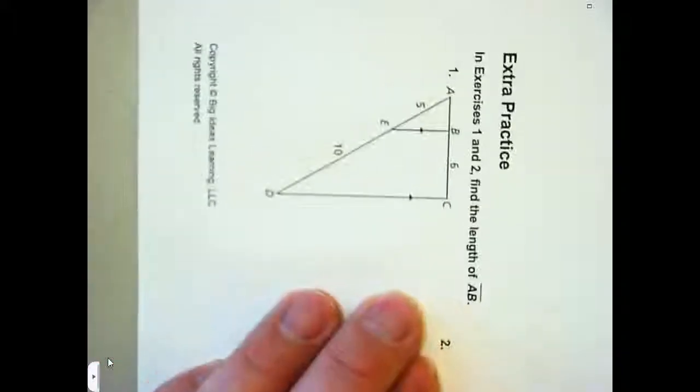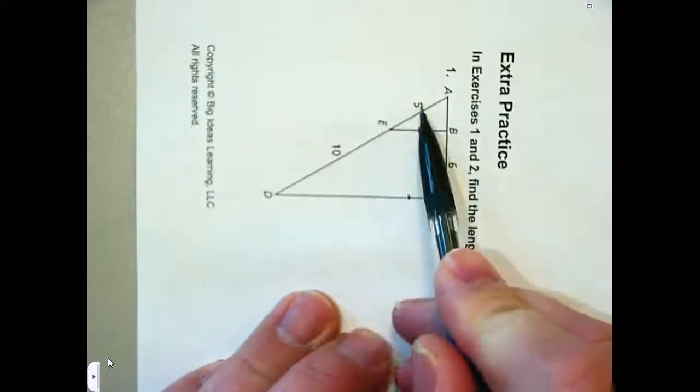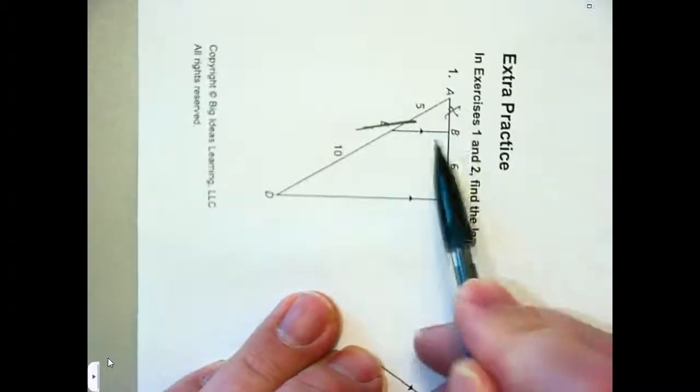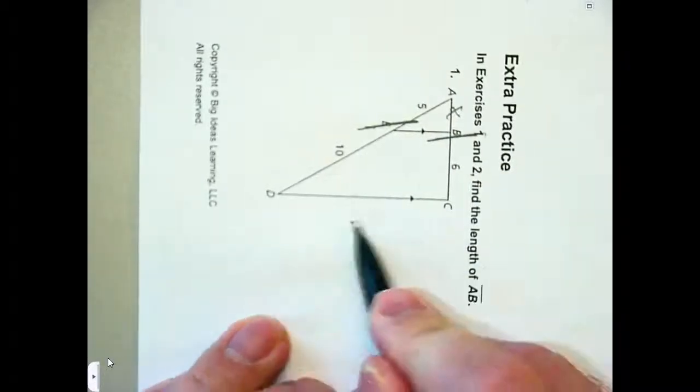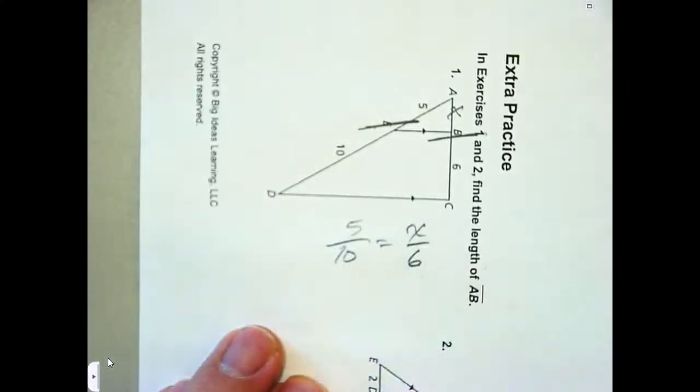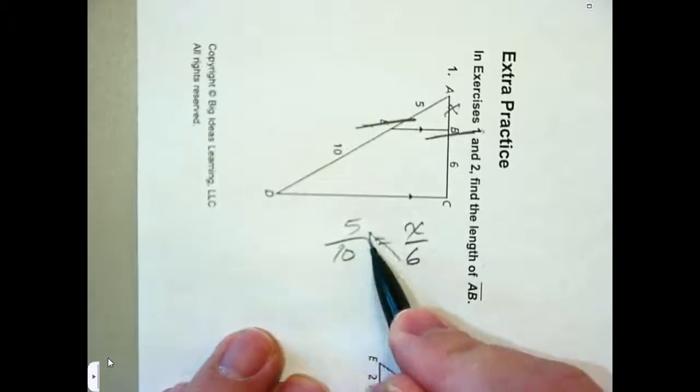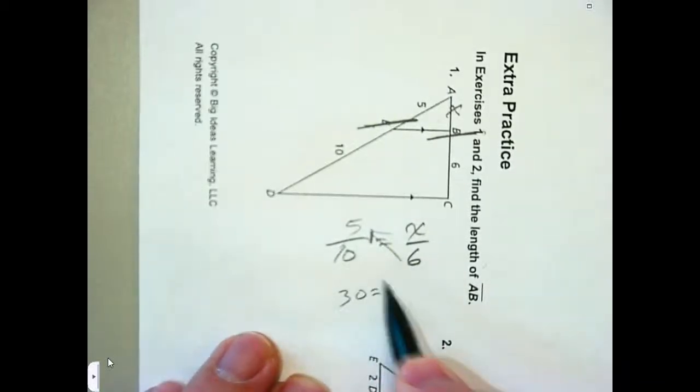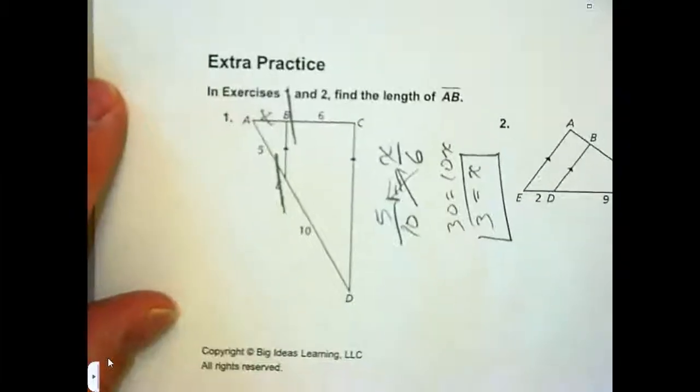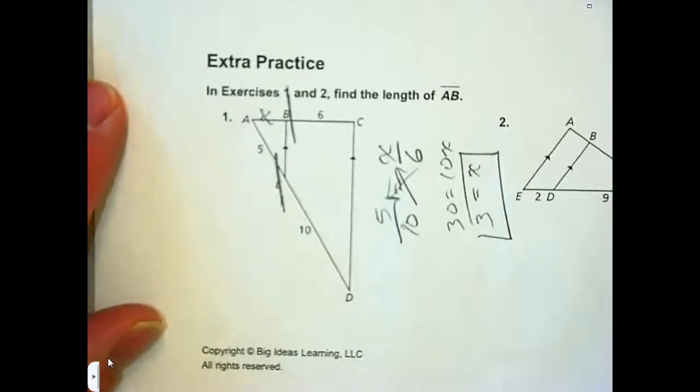Number one, those are my parallel lines. Split your parallel line. Five is to ten as, if I label this X, X is to six. There's my proportion. It really is that simple if you identify the parallel line. In that case, you get 30 equals 10X. So, X equals three. Obviously, you don't want to turn your paper like that.